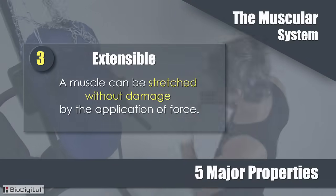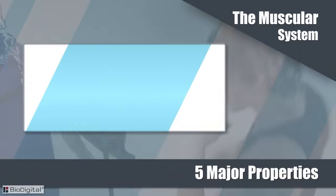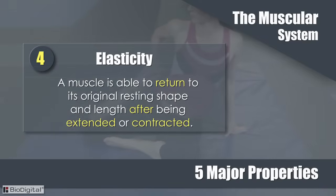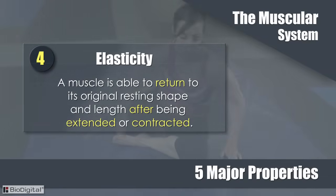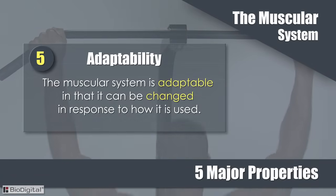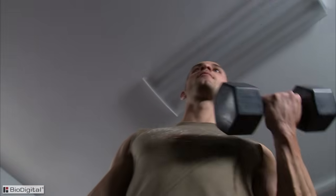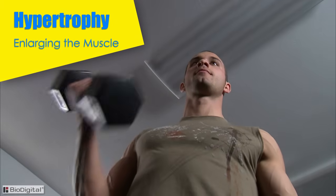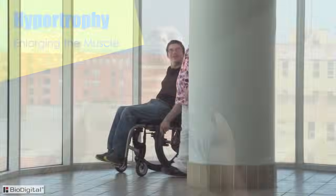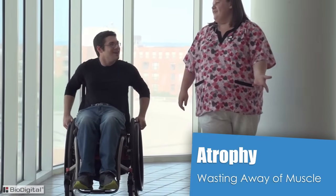Being extensible means a muscle can be stretched without damage by the application of force. With elasticity, a muscle is able to return to its original resting shape and length after being extended or contracted. The muscular system is also adaptable — it can change in response to how it is used. For example, a muscle will enlarge or undergo hypertrophy with increased work, but can go into atrophy and waste away if deprived of work.